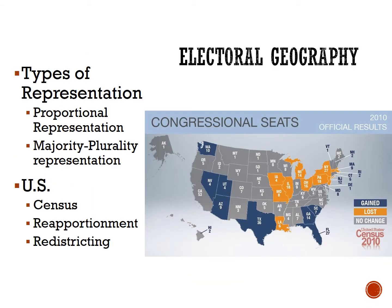Now let's shift to another way that space is organized politically: for elections. Electoral geography examines how people's political preferences are manifested in representation. In places like Europe, they use a proportional representation system, meaning multiple representatives can be elected. Voters choose from among political parties rather than individual candidates, and legislative seats are divided on a proportional basis. So for example, if a party received 30% of the votes, they would receive 30% of the legislative seats. We tend to see this in countries with many political parties.